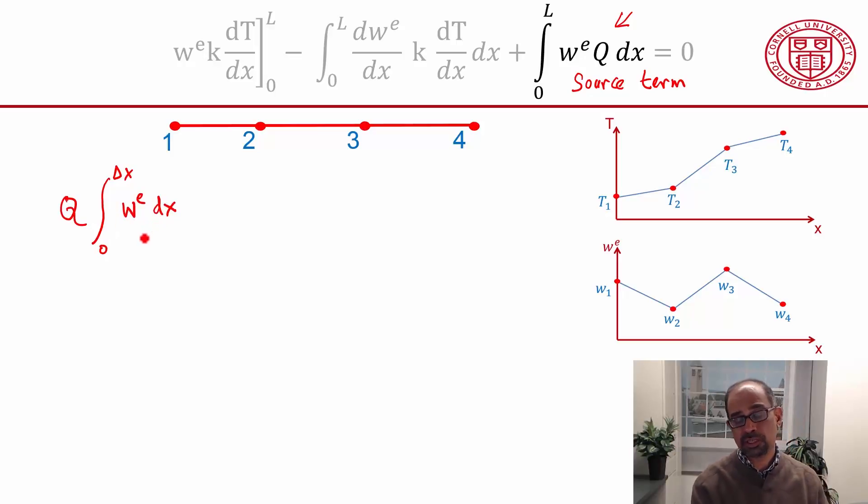So it just becomes an integral of the weighting function, and that means this integral will give me this area. And you can work out what that area is, and that comes out to be q times w1 plus w2 times delta x divided by 2. That's the area.